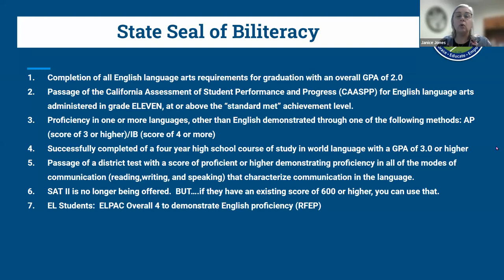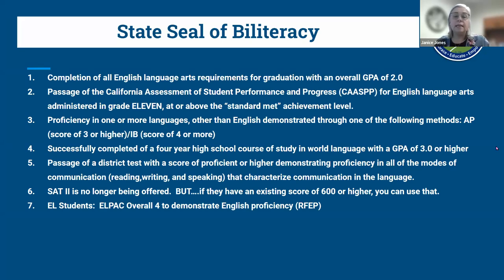Methods to demonstrate proficiency in a language other than English include: an AP exam in Spanish, French, or another language with a score of 3 or higher; an IB score of 4 or more; successful completion of a four-year high school world language course of study with a 3.0 GPA if they did not pass the AP exam; passing a district test (AVANT) with a proficient score or higher in all modes of communication; a prior SAT2 score of 600 or higher; or for EL students, an ELPAC overall score of 4.